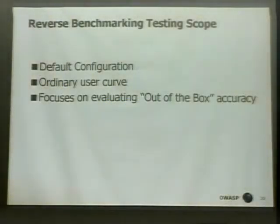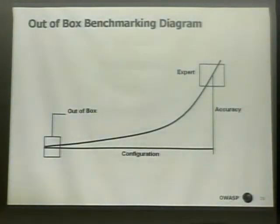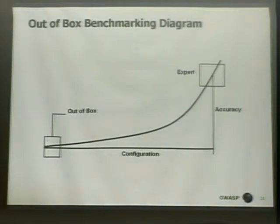We're looking at the out-of-the-box accuracy as opposed to the expert configuration that a very sophisticated user of the scanner would ultimately be able to use to decrease false positives and increase true finds. Here's a diagram showing that as you increase the amount of configuration — denoting being an expert — your accuracy is going to rise. At the out-of-box level, you're going to have lower accuracy than at the expert configuration, which is logical. But some experts are better than others.